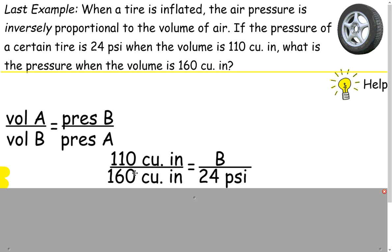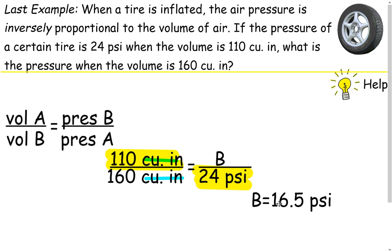110 cubic inches over 160 cubic inches. 110 goes with 24. Notice that there's our A's. Also, notice when we're doing this that the cubic inches cancel each other out. So you're going to end up with psi, which is what we want as our answer. Do some cross-multiplying, and you're going to end up with B of 16.5 psi.